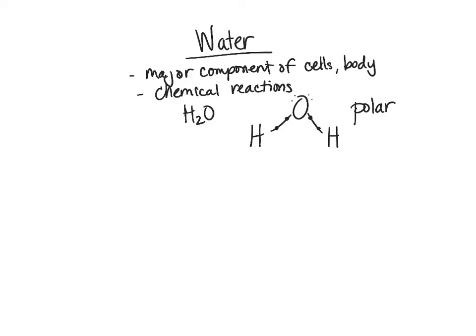What did polar mean? It meant that our oxygen is partially negative and our hydrogens are both partially positive, because our oxygen is pulling the electrons closer to it. It's more electronegative than our hydrogen ions. We're pulling those electrons toward it, which gives it this partial negative charge. So water is considered a polar molecule, which is very important.